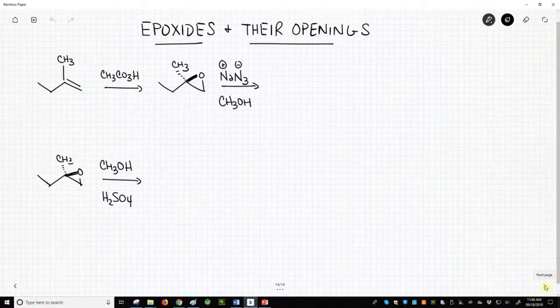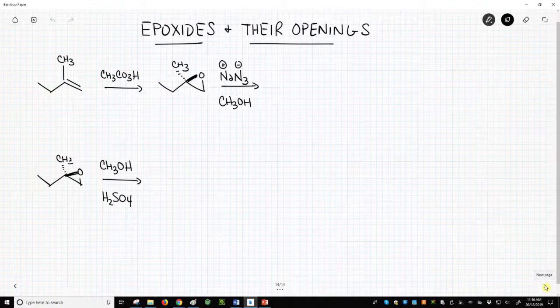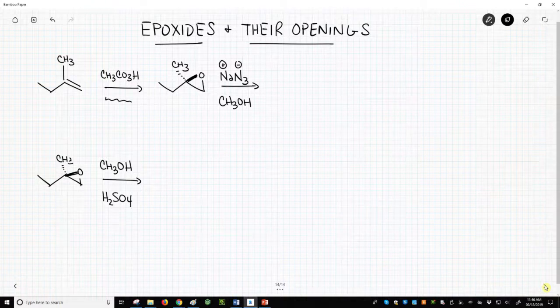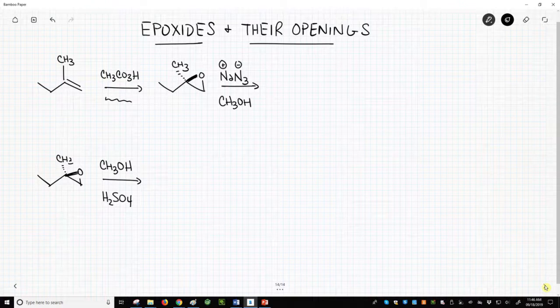One of the common ways to make epoxides is with a peroxyacid. Peroxyacetic acid is very common. Peroxyacids are written as RCO3H. This reagent directly converts the alkene into an epoxide.